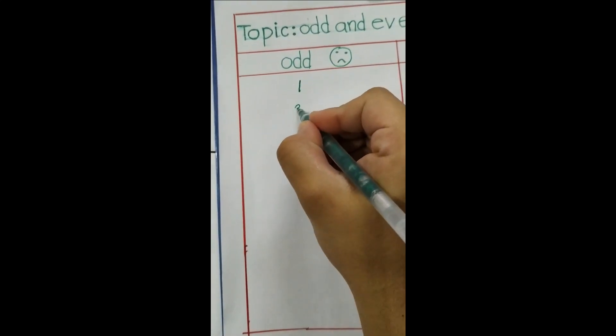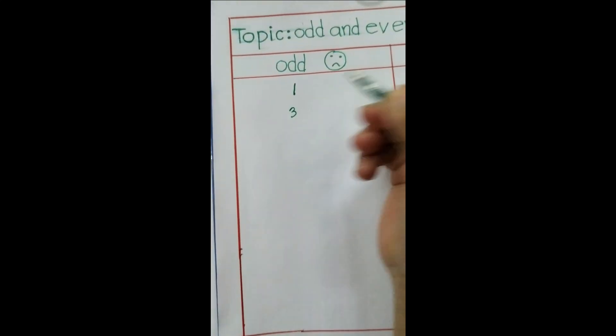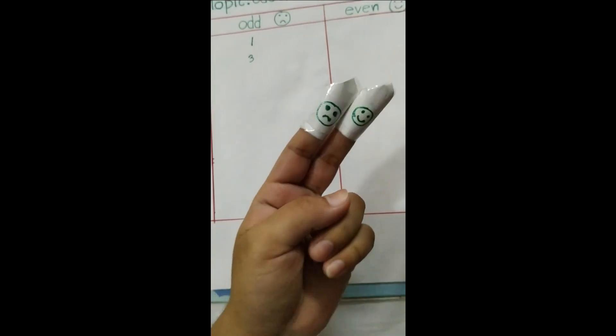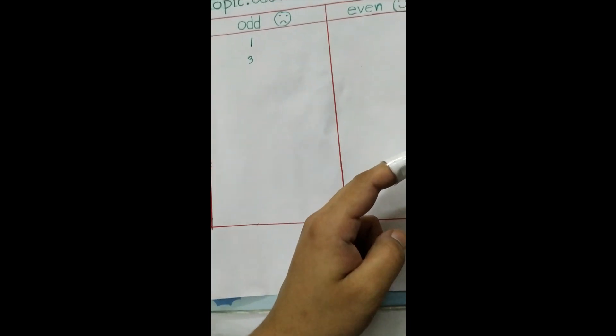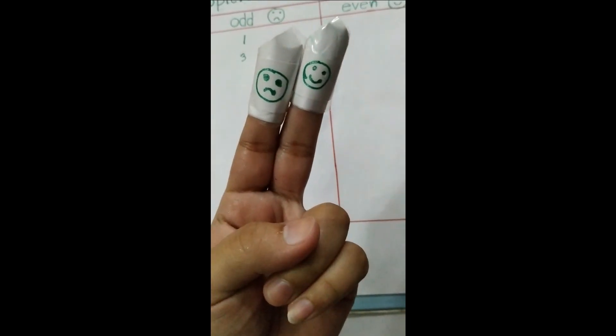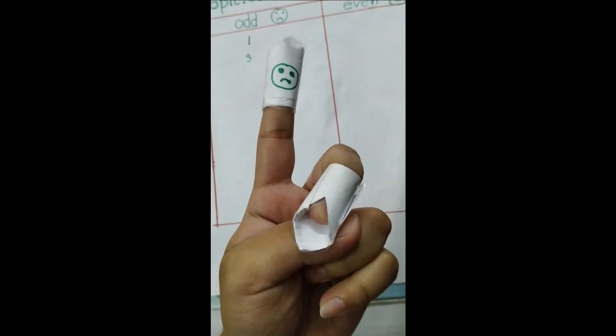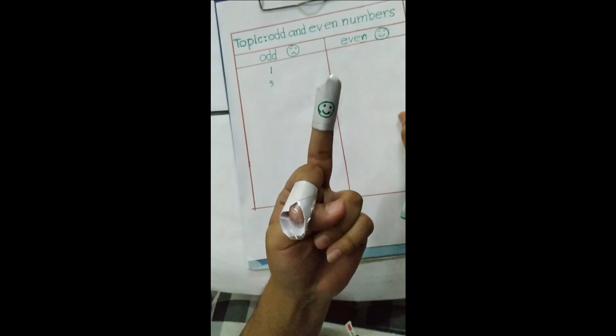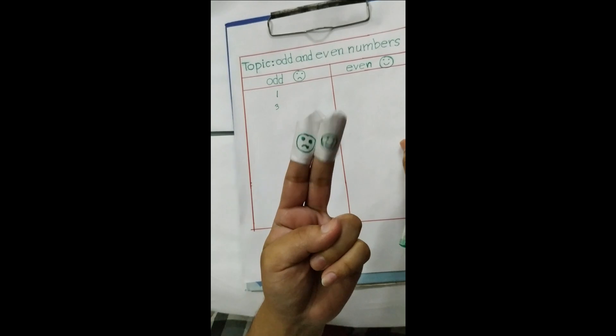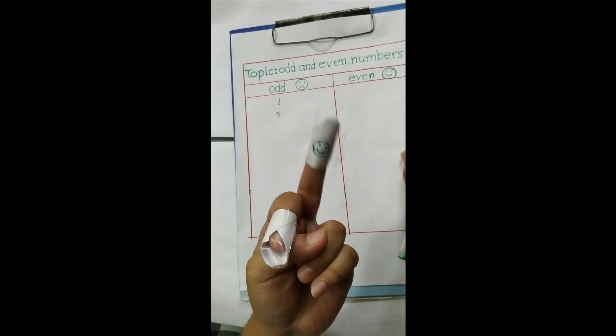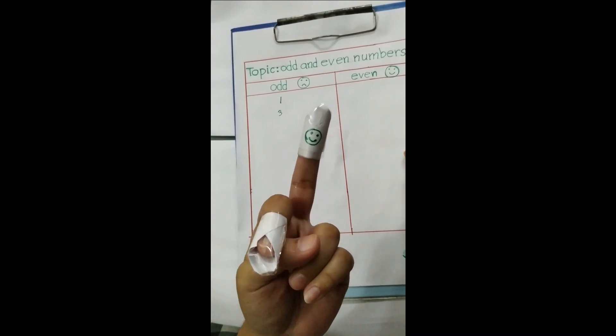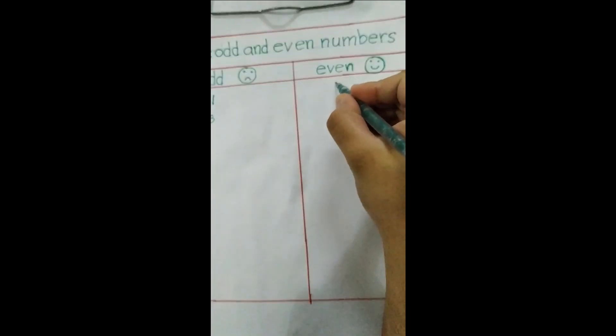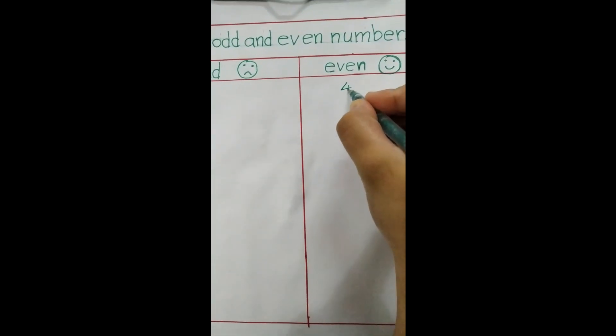If I want to write four, let's start: one, two, three, four. That means four is happy because four has lots of friends. That means four is even. We can write here four.